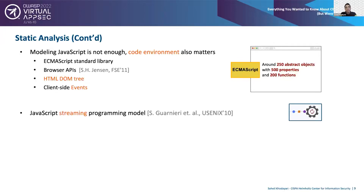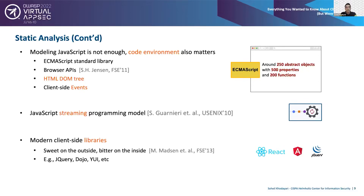Contrary to most static analysis assumptions, the entire code base is never available for analysis because of the JavaScript streaming programming model — the code is streamed to the user's browser, and at any point a setTimeout function may load more code, making static analysis unsound. Finally, we must handle modern client-side libraries like jQuery and Angular, which come with lots of overloading, reflection, and callbacks — sweet on the outside, but bitter on the inside for analysis. Repeatedly modeling these libraries for each new page leads to poorly scalable solutions.